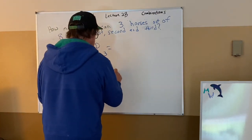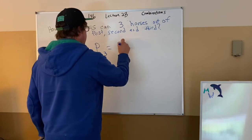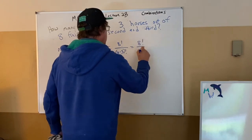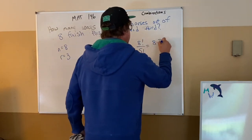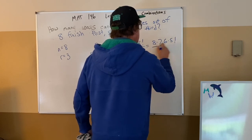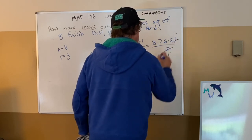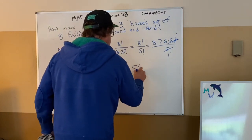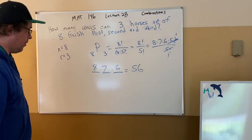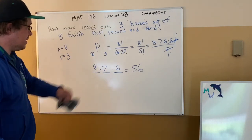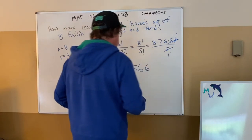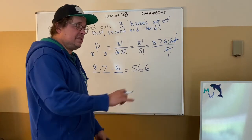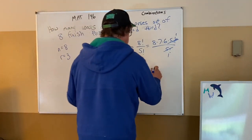For 8P3: 8 factorial over (8 minus 3) factorial = 8 factorial over 5 factorial = 8 times 7 times 6 times 5 factorial, over 5 factorial — cancel — giving 8 times 7 times 6 = 336. We saw 56 from the combination. The permutation is 56 times 6, because there are 6 ways to arrange three items (ABC, ACB, BAC, BCA, CAB, CBA). So 8P3 = 336.